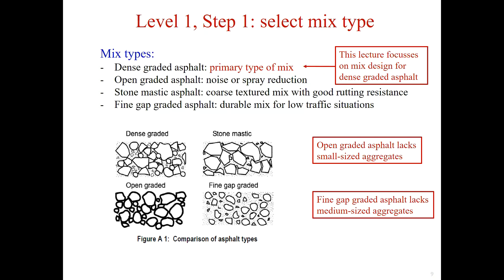A dense graded asphalt mix has a continuous distribution of aggregate particle size and filler, and a low designed air-void content, generally in the range of 3 to 7 percent.